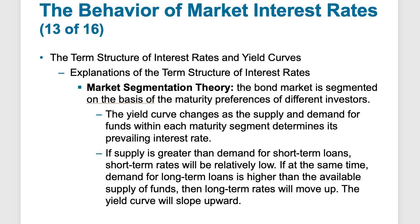Market Segmentation theory says the bond market is segmented into three segments — short, intermediate, and long — each with its own supply, demand, and investors. The yield curve changes based on supply and demand within each segment. If there's much more supply and demand in short-term loans, short-term rates will be relatively lower. At the same time, if there's more demand for longer-term loans, those rates should go higher to match that demand.